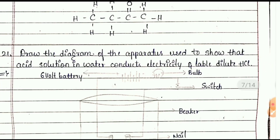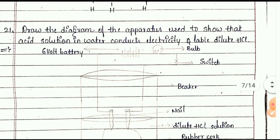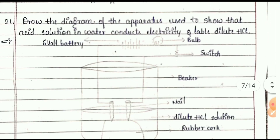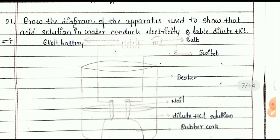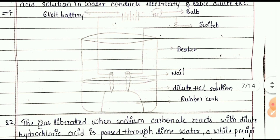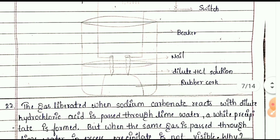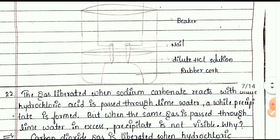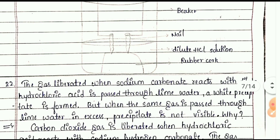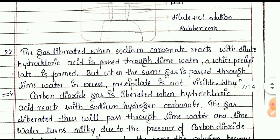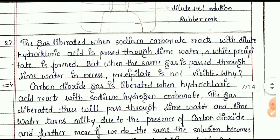Draw the diagram of the apparatus used to show that an acid solution in water conducts electricity and label it with dilute HCl. You can see the figure: a six-volt battery, bulb, switch, beaker, nail, dilute HCl solution, rubber cork.